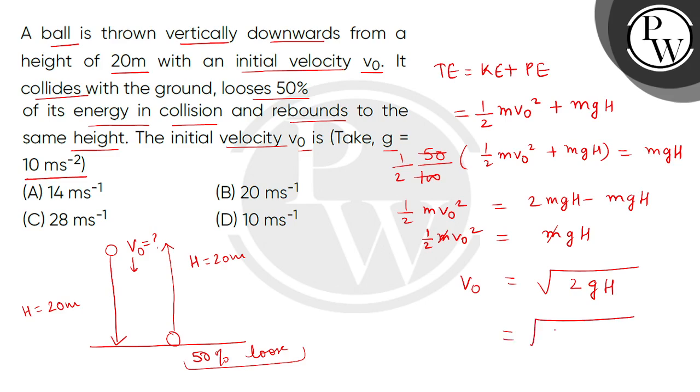So, we will put the values. G value is 10 and H value given is 20. So, this is 20 meter per second.